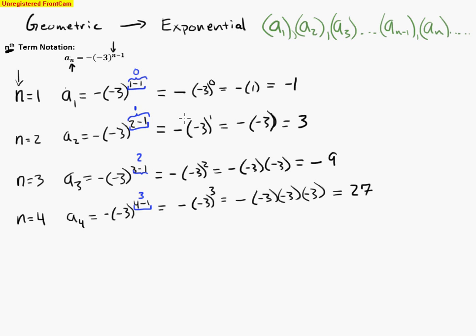So my sequence is going to start, my first one, a_1 is negative 1. a_2 is 3. a_3 is negative 9. And a_4 is 27.